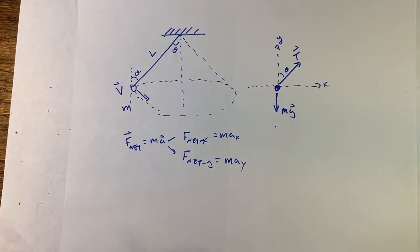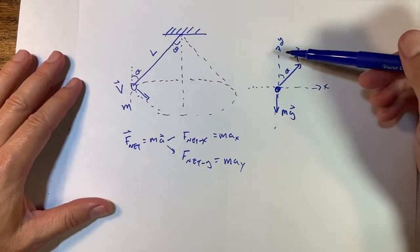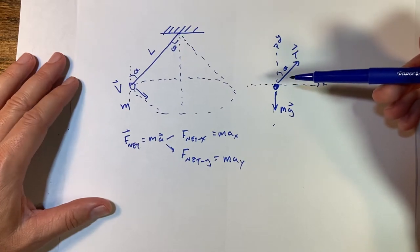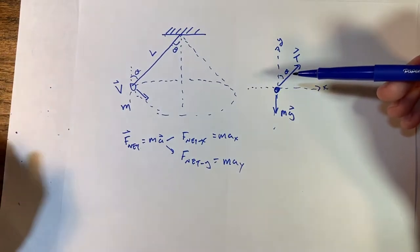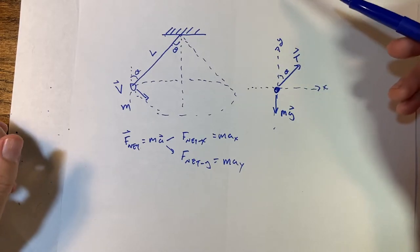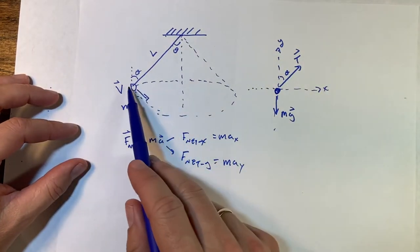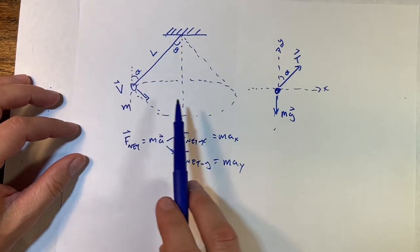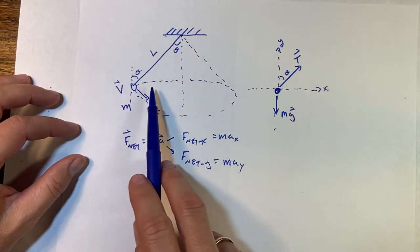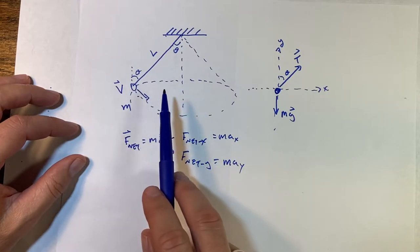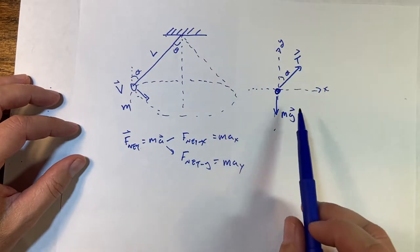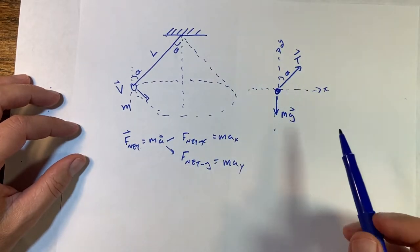Now one of these is zero. Not both of them, one of them. Now this is the important part. If I pick my coordinate system such that the acceleration is in just one direction, I'm going to make my life happy. So in this case, if this is moving around in a circle, it's not accelerating up or down because it's staying in that flat plane. And it is accelerating in the x-direction because that's towards the center of the circle. So in this case, the y-acceleration is zero and the x-acceleration is centripetal acceleration.